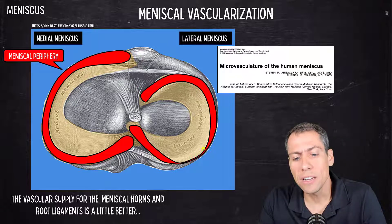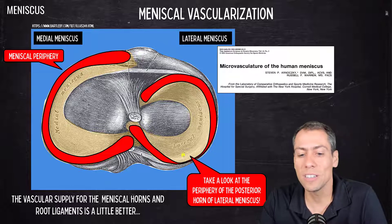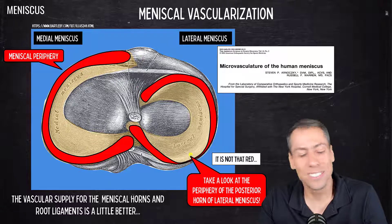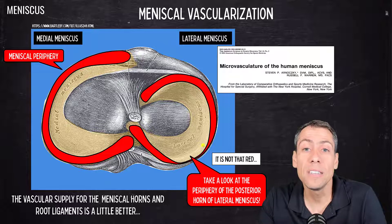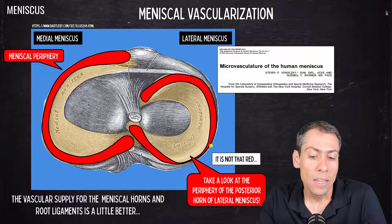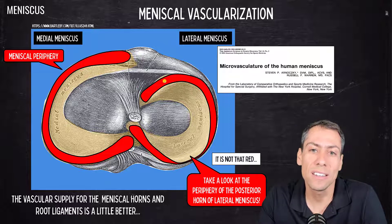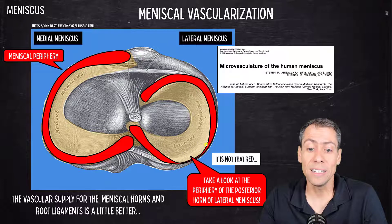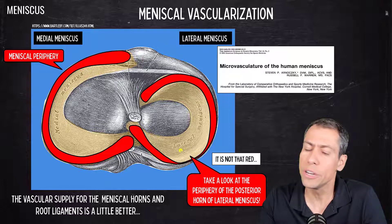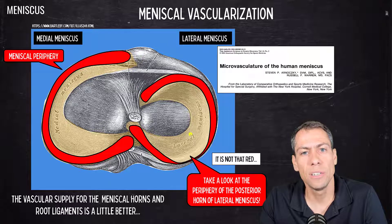I'd like to draw your attention to the posterior horn of the lateral meniscus. The periphery of this area is not as red — it's more a red-white or even a white zone — because the popliteal hiatus is located here and the popliteal tendon passes through this region. So the meniscus here doesn't have the same amount of vessels as the rest of the lateral meniscus periphery. Orthopedic surgeons need to know if a tear extends into this region because it's a difficult area when it comes to healing capacity.